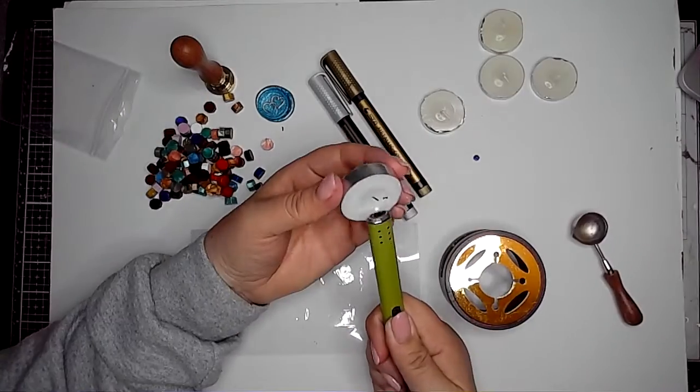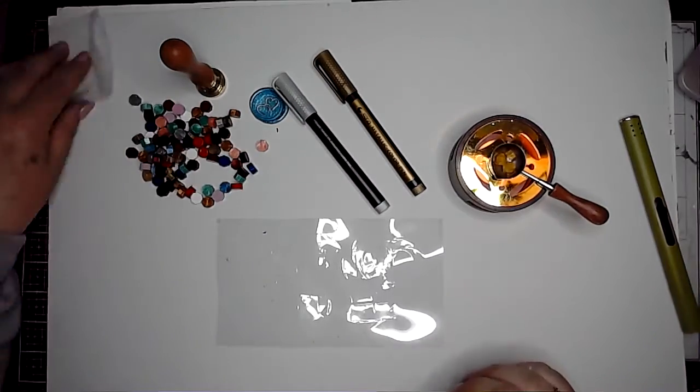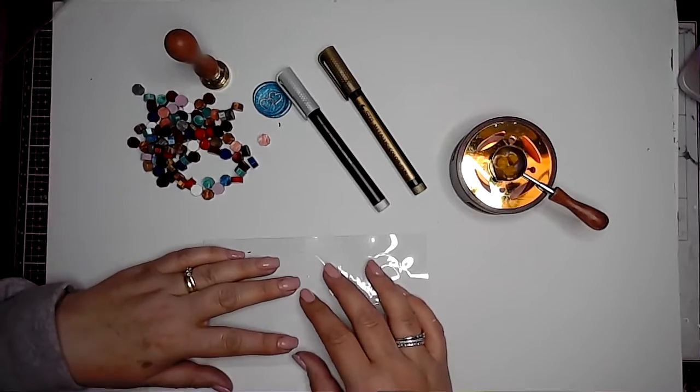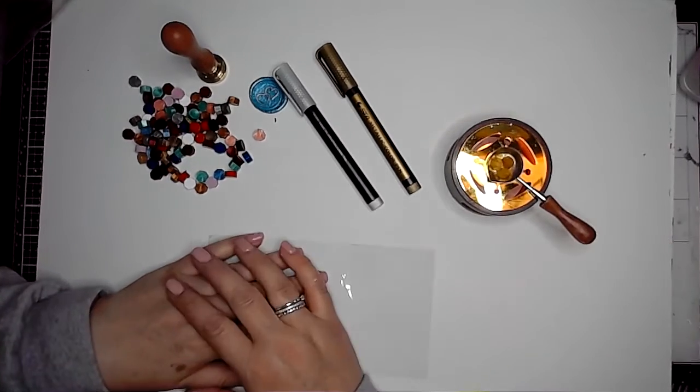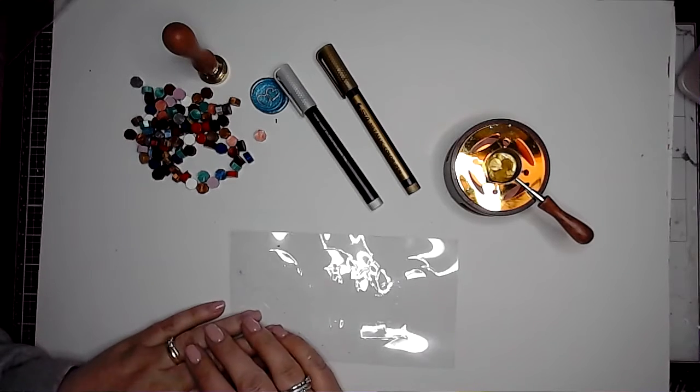I wanted to make wax seals ahead of time that I could store. I know part of the thing of having the wax seals is that you can anchor things down using them, but I also thought if I make some ahead of time and I haven't got time to wait for the wax to melt, then I can just stick them into my journal pages.